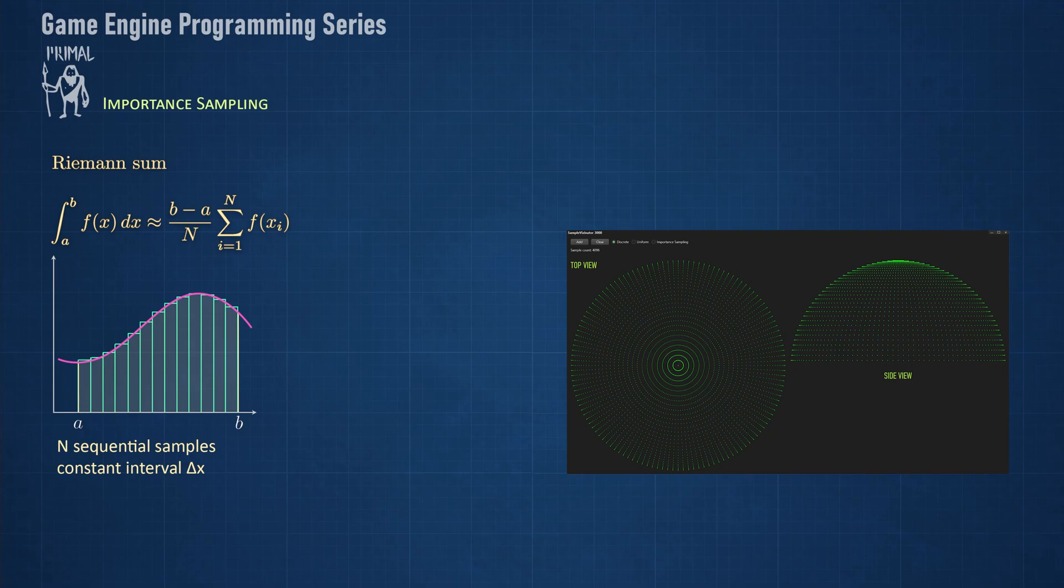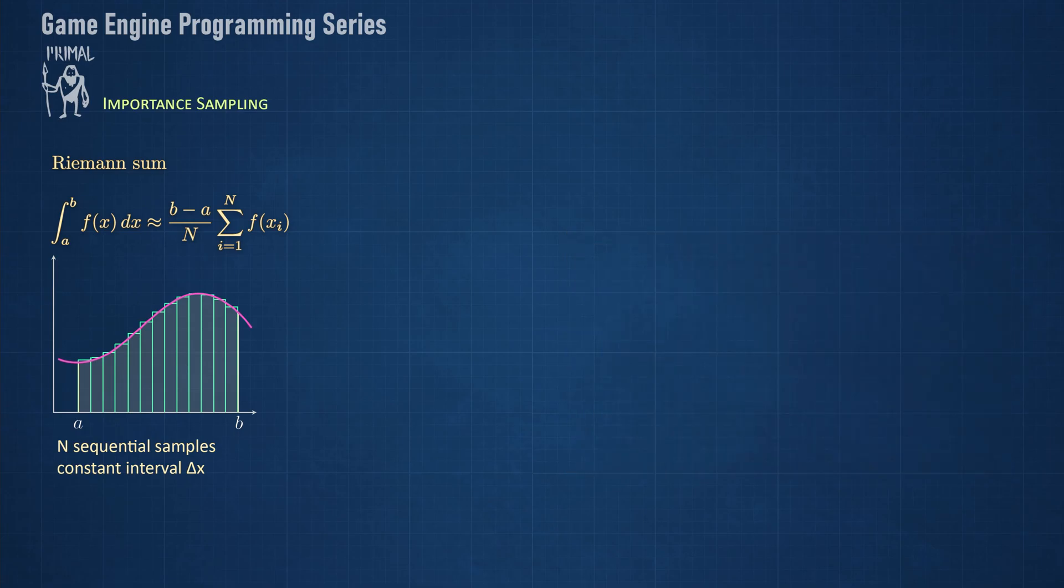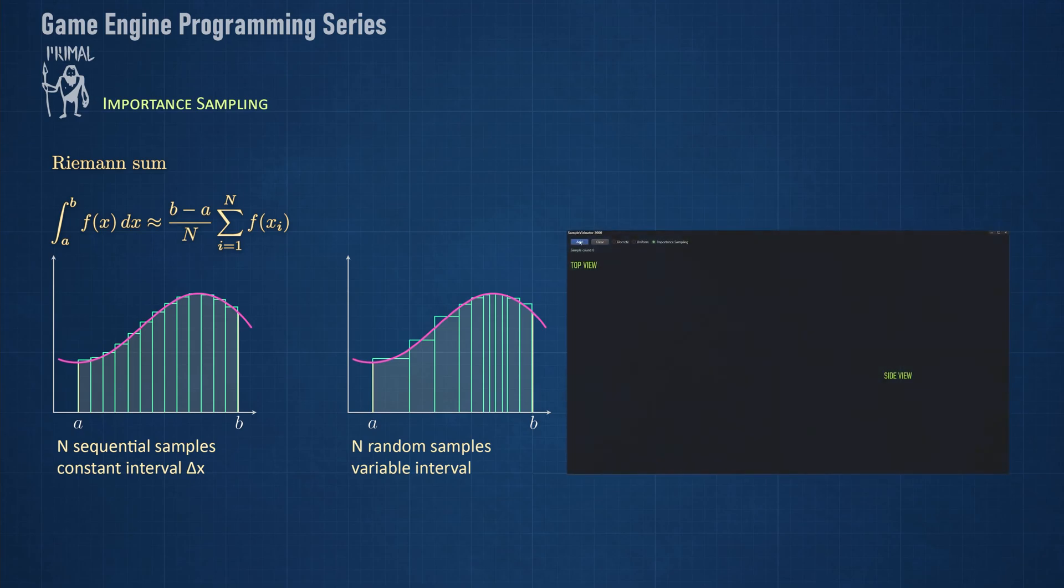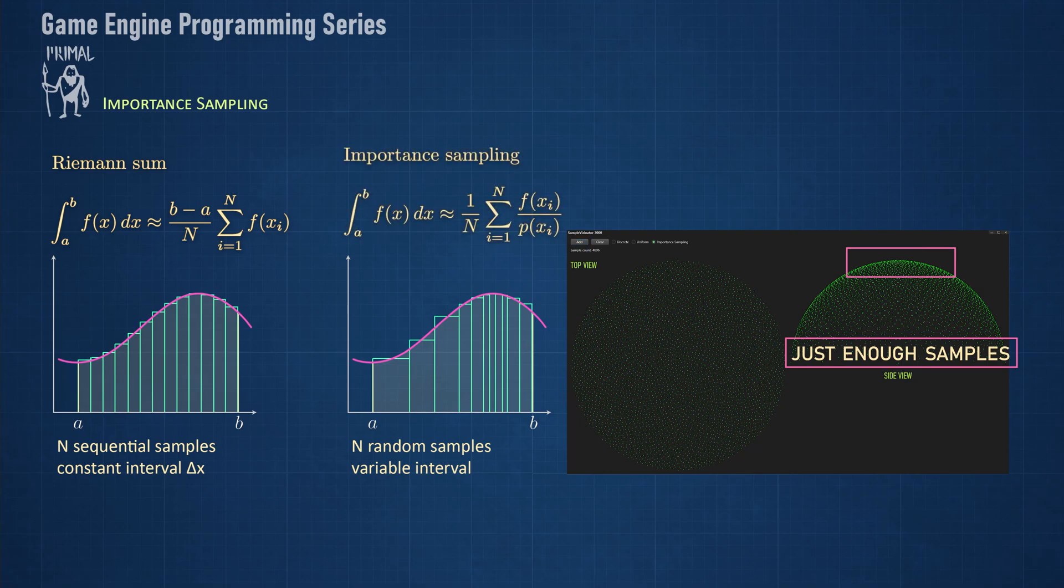Think, for example, of the lighting samples at a grazing angle to the plane, whose contribution to the total lighting is next to nothing, and we wouldn't want to waste computing power for those samples. Alternatively, we can take random samples at variable intervals and we want to distribute our samples in such a way that they are more concentrated around areas with higher importance. This is called importance sampling, which actually looks very much similar to the Riemann sum.